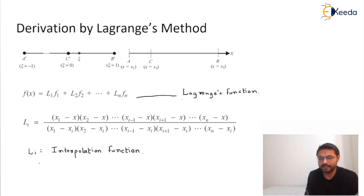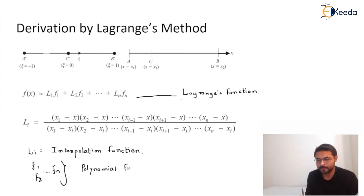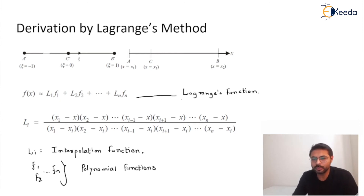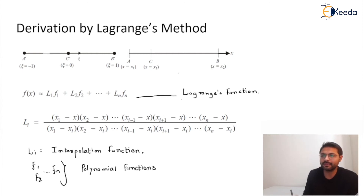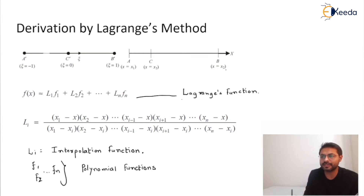So f1, f2, f3 are polynomial functions up to fn. Now we want to derive the relation between this polynomial function and the shape function at the different points. We start putting the values one by one. As we derived in the Serendipity PDT method, three points are taken: a, b and c, which have local coordinates x1, x2 and x3.